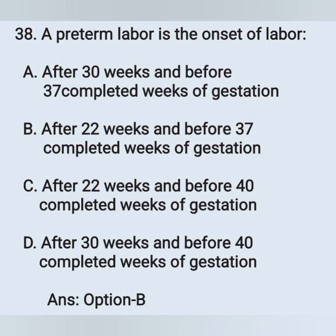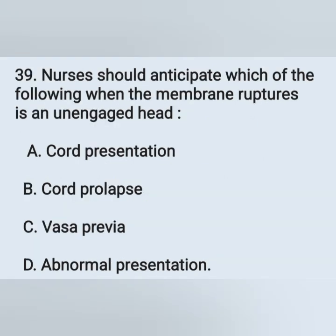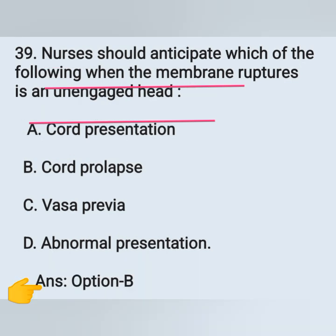Question 39: A nurse should anticipate which of the following when the membrane ruptures with an unengaged head? Options: option A, cord presentation; option B, cord prolapse; option C, vasa previa; option D, abnormal presentation. The correct answer is option B, cord prolapse.